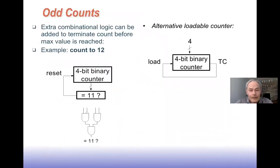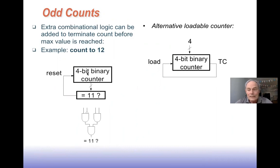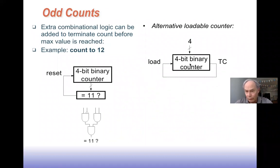For odd counts — counting to something other than the maximum — we can add a small comparator: when the count reaches a target value (e.g., 11), reset the counter back to zero. Alternatively, use a loadable counter where the flip-flops have a MUX at their input so a specific value can be loaded in; the terminal count then triggers a load, causing it to count from that loaded value (e.g., 4) up to 15.